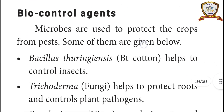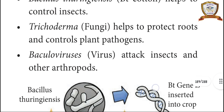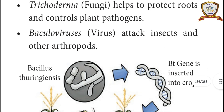Bio-control agents. Microbes are used to protect crops from pests. Examples: Bacillus thuringiensis — Bt cotton helps to control insects. Trichoderma, a fungus, helps to protect roots and controls plant pathogens. Baculoviruses attack insects and other arthropods.